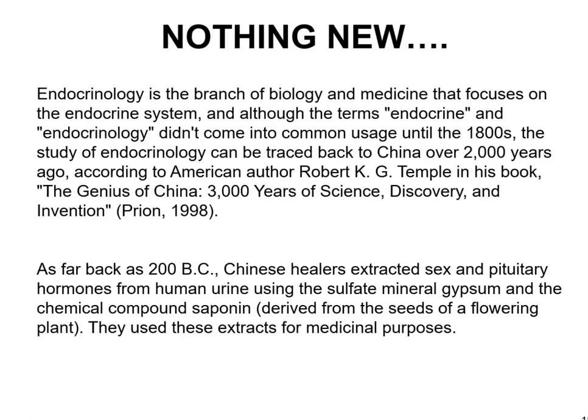According to author Robert K. G. Temple in his book 'The Genius of China: 3,000 Years of Science Discovery and Adventure,' as far back as 200 BC, Chinese healers extracted sex and pituitary hormones from human urine using the sulfate mineral gypsum and the chemical compound saponin derived from the seeds of a flowering plant, using these extracts for medicinal purposes.